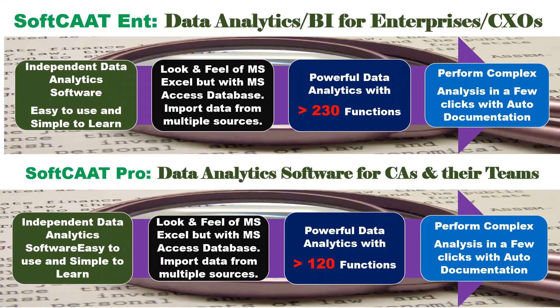SoftCAAT is currently available in two flavors. One is SoftCAAT Enterprise, which is a data analytics and BI software for enterprise and CXOs. Second, we have SoftCAAT Pro, a limited version primarily used by professional firms. Both are independent data analytics software, easy to use and simple to learn, with the look and feel of MS Excel but with an MS Access database backend — and a higher-end version has MS SQL. SoftCAAT Enterprise has more than 230 functions, while SoftCAAT Pro has 120 functions. Both feature auto documentation, which automatically records all tasks you perform for future reference, peer review, and learning.